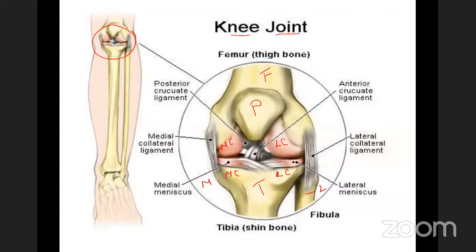There are two menisci — the medial meniscus and the lateral meniscus. These menisci divide the joint cavity into two compartments, which we will discuss later.